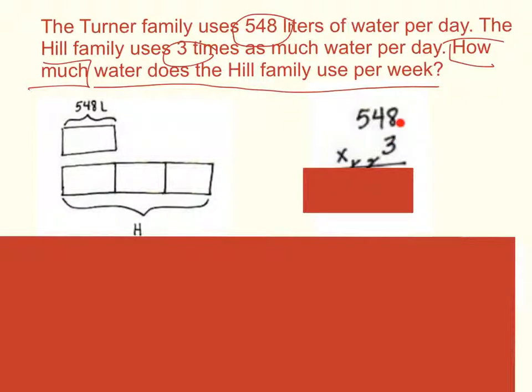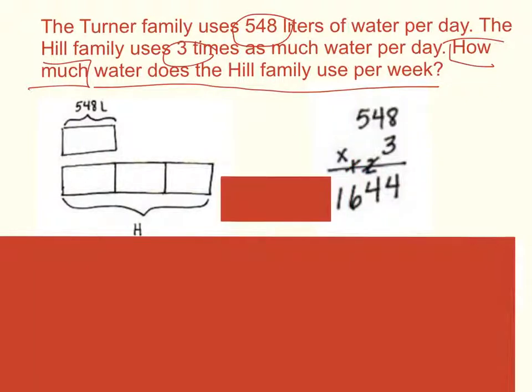Start off in our ones column. 3 times 8 will give me 24. Put the 4 in the ones place and carry the 2 to the tens place. In our tens column, 3 times 4 tens would be 12 plus 2 more tens would be 14 tens. So put our 4 in our tens column and carry our 1 to our hundreds column. And finally, 3 times 5 will be 15 plus 1 more hundred, which will be 16 hundreds.